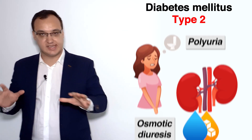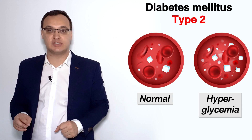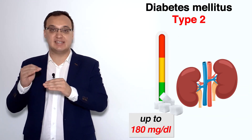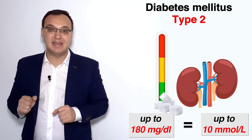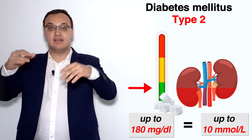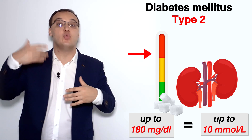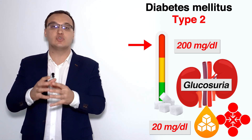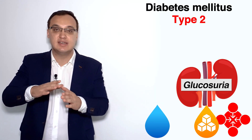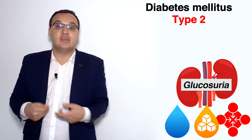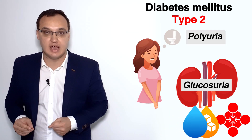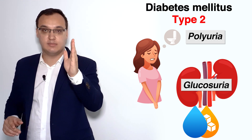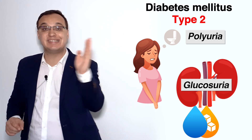To recap how we got here: we have hyperglycemia — a high level of glucose in the blood. The kidney threshold is up to 180 mg/dL or up to 10 mmol/L. We exceeded that with 200 mg/dL, so the excess 20 mg/dL entered the urine. We had a high concentration of glucose in the urine; water tried to dilute it, so the patient now needs to urinate a lot — polyuria. The sequence is: hyperglycemia → glucosuria → polyuria.